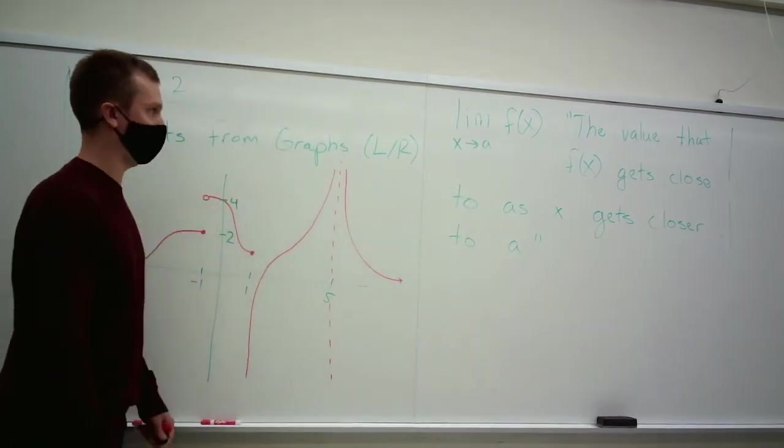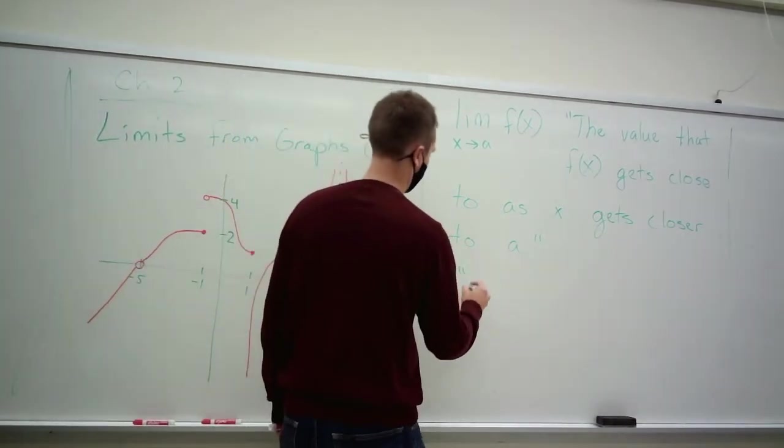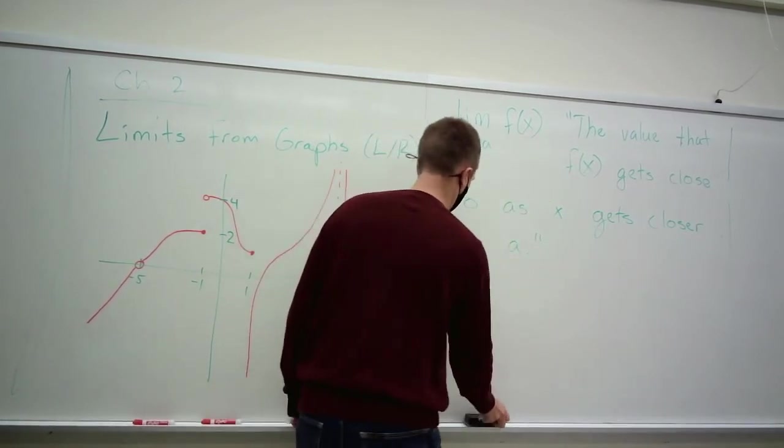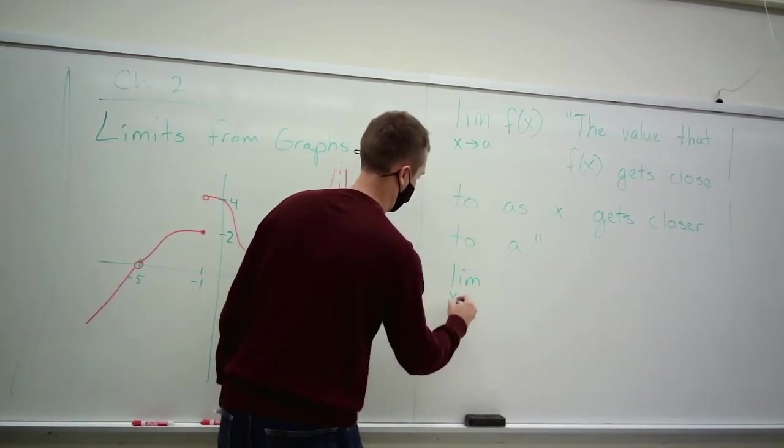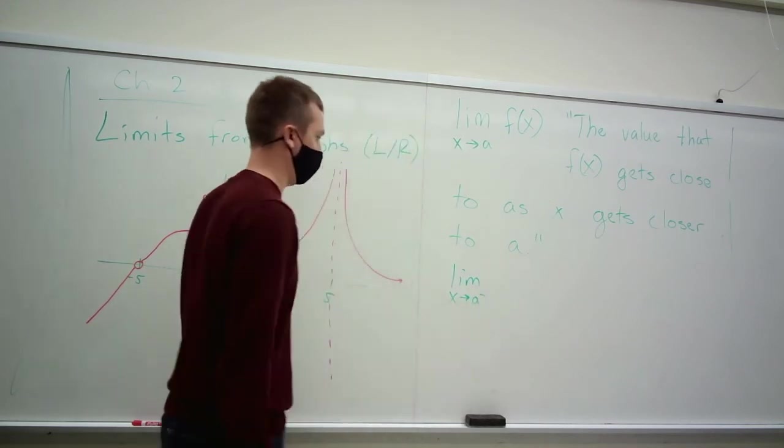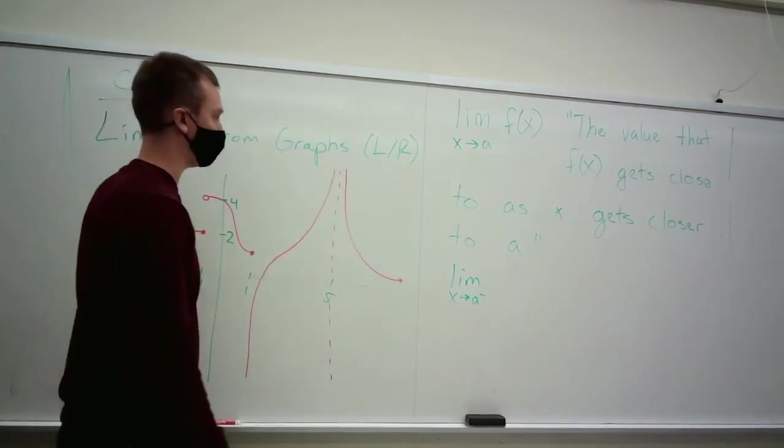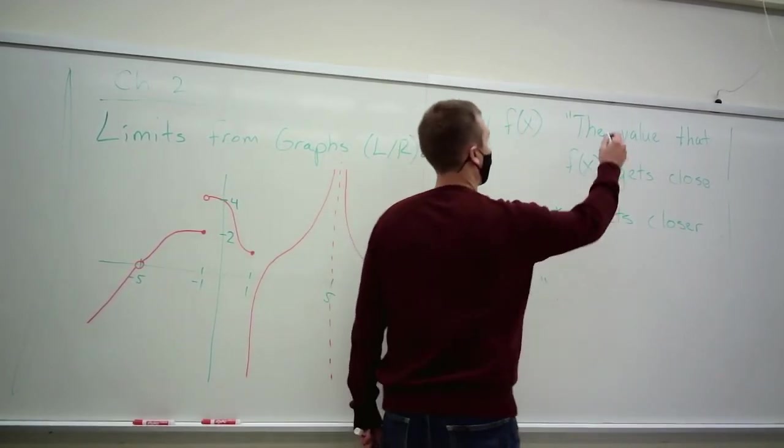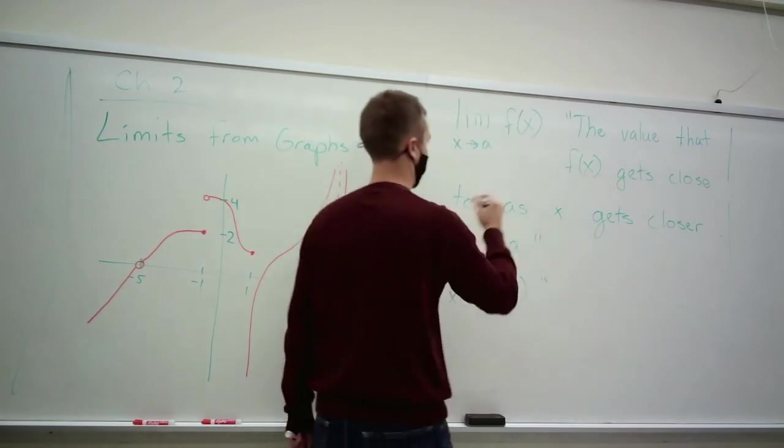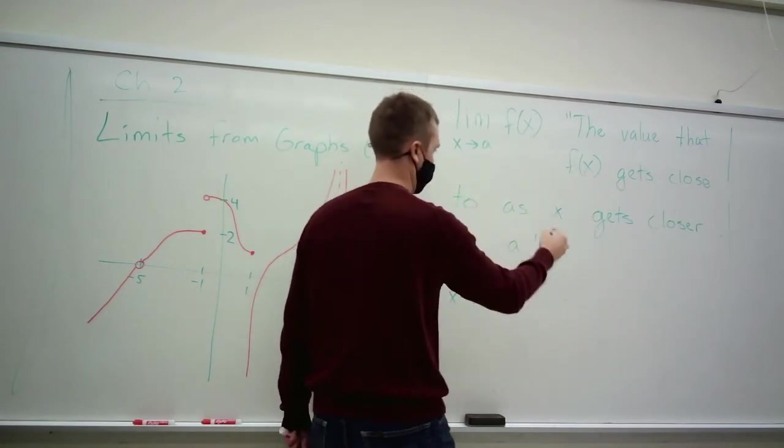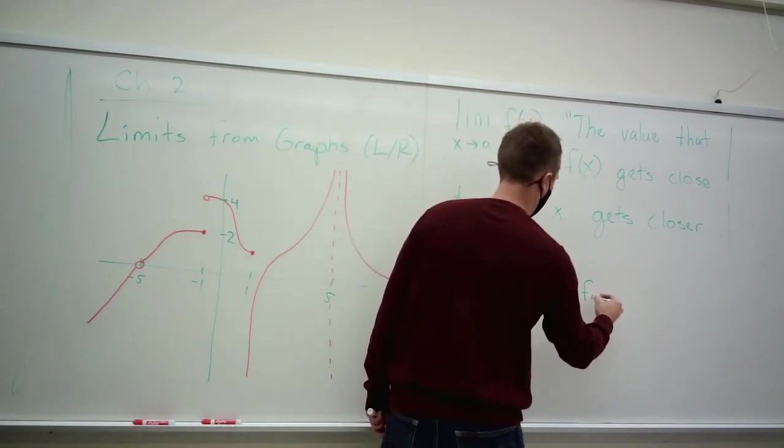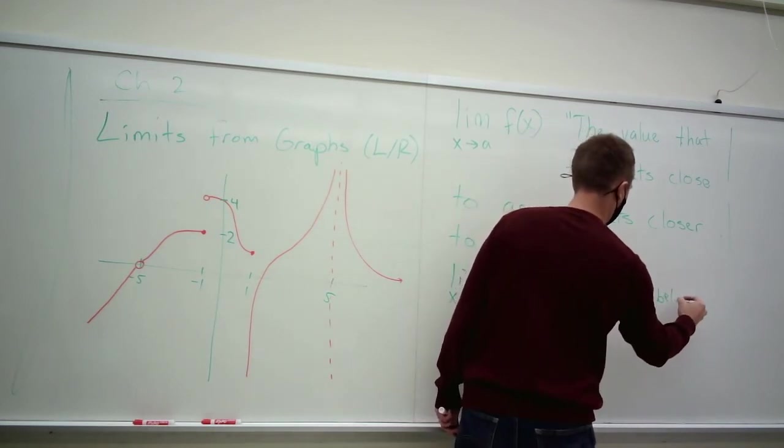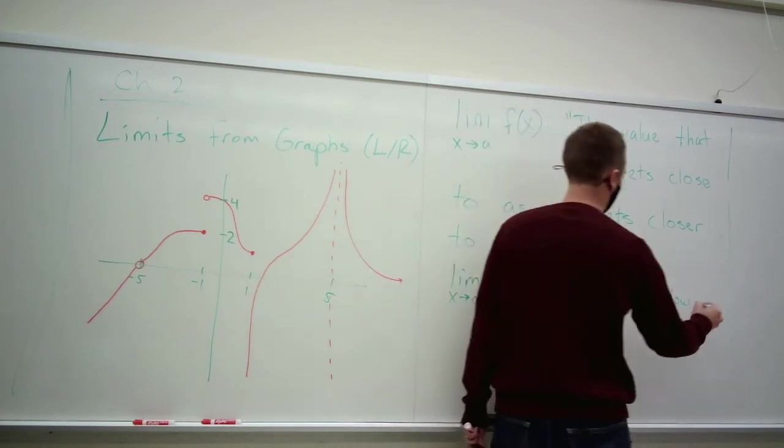I'm putting it in the order of x gets closer to a. Okay, we introduced left-hand limits. There's a little negative sign superscripted. It means the same thing, the value that f of x gets close to as x gets close to a from just below a. So like in parentheses from just below a.